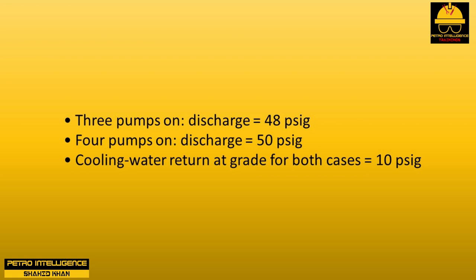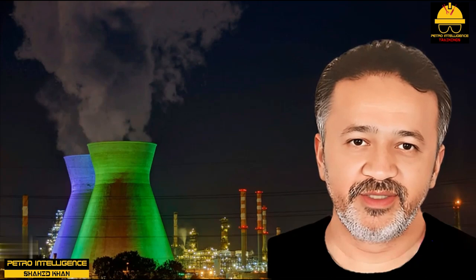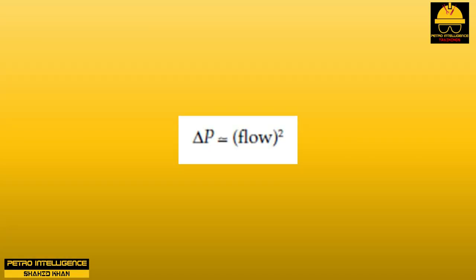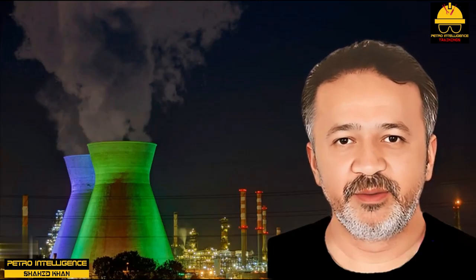For example: three pumps on discharge equals 48 psig; four pumps equals 50 psig. Cooling water return for both cases equals 10 psig. The delta P for the three-pump case is 38 psig; the four-pump case is 40 psig. That means the pressure drop through the exchangers and piping system has increased by 2 psi, or 5%. Since pressure drop varies with flow squared, the water flow has only increased by 2.5% by starting the fourth pump. This does not usually indicate a pump malfunction — more likely all four pumps are operating on the flat portion of their pump curve.